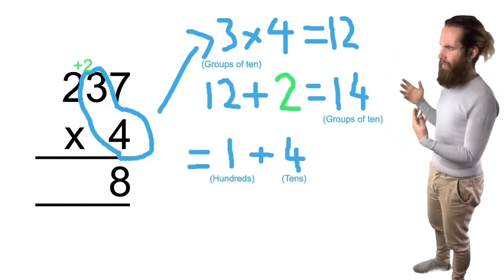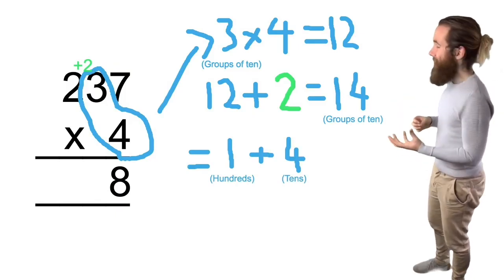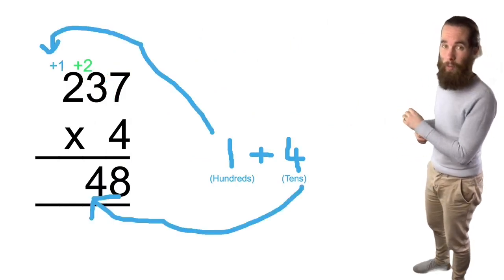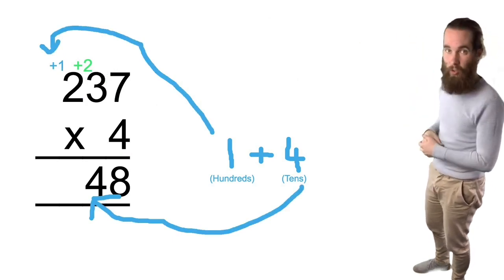So I've got four tens and one hundred, 14 groups of 10. So I'm going to put down the four and I'm going to carry the 100 over to the hundreds column.